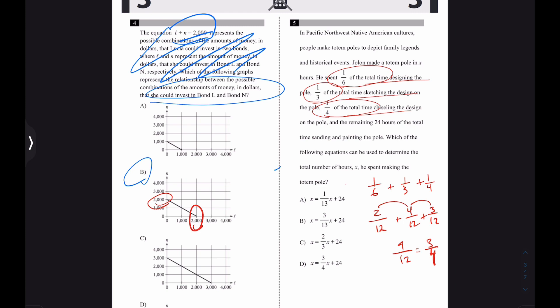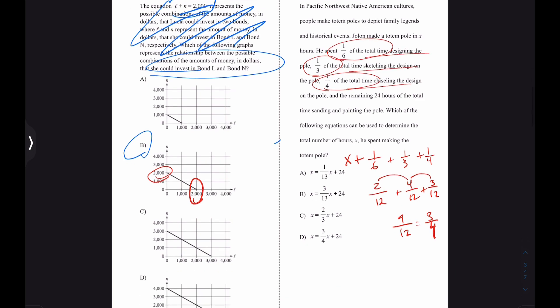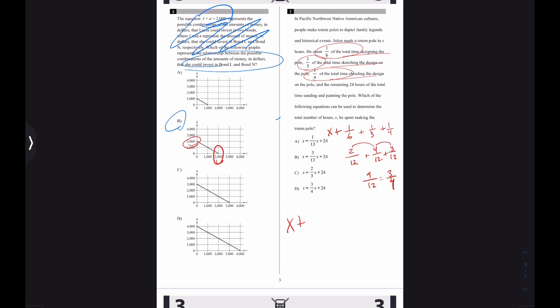So if three-fourths of the time was spent designing, sketching, and chiseling, which of the following can be used to determine the number of hours he spent making the totem pole? Interesting. So x plus this equals, oh, interesting. So it's x plus all that, so really plus three-fourths, equals in the remaining 24 hours. Oh, I really should have read this. It says, and the remaining 24 hours, sanding and painting the pole. Interesting. Oh, Jalon made a totem pole in x hours. So x equals three-fourths x plus 24. Yeah, the answer is D. Weird, really weird.